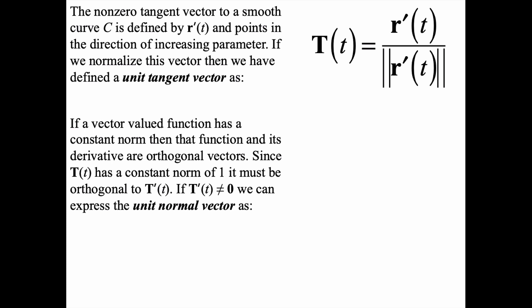If a vector-valued function has a constant norm, then that function and its derivative are orthogonal vectors. The unit tangent vector has a constant norm, namely 1, so it must be orthogonal to its derivative T'(t). Therefore, if T'(t) does not equal the zero vector, we can define the unit normal vector as N(t) = T'(t) / ||T'(t)||.